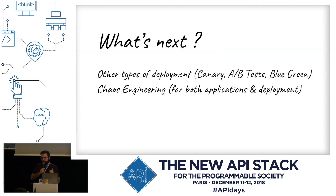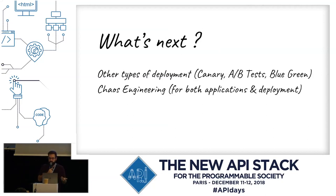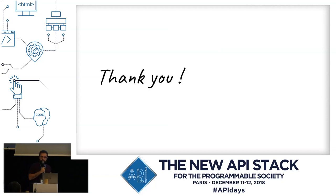Finally, what we plan to do next year is chaos engineering — not only for applications, but for the deployment and build process. We want to chaos our deployments to see what happens if it fails in the middle of a Kubernetes deployment, or if we've only released half of what we wanted. These are the two next steps for next year. That's all for me — I hope you enjoyed the presentation and I'm here to answer any questions. Thank you.